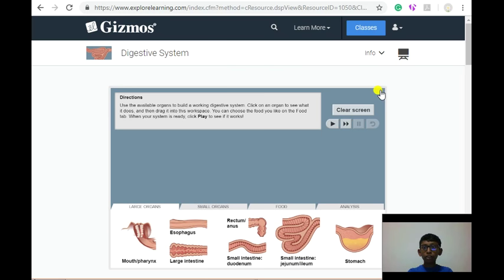In this Gizmos, we are going to build a working digestive system using available organs. As you can see, there are four tabs: large organs, small organs, food and analysis. Let me begin by placing the large organs.